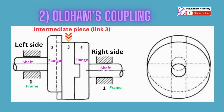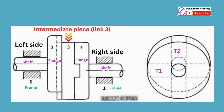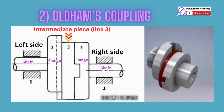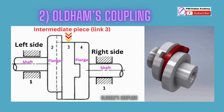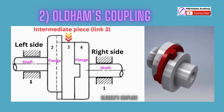The flanges have diametrical slots cut in their inner faces. The intermediate piece (link 3) is a circular disk with two tongues — diametrical projections T1 and T2 on each face at right angles to each other. The tongues on link 3 closely fit into the slots in flanges (links 2 and 4), allowing link 3 to slide or reciprocate. When driving shaft A rotates, flange C (link 2) causes the intermediate piece (link 3) to rotate at the same angle, which further rotates flange D (link 4) and thus shaft B. Hence links 2, 3, and 4 have the same angular velocity at every instant, with sliding motion between link 3 and each of links 2 and 4.